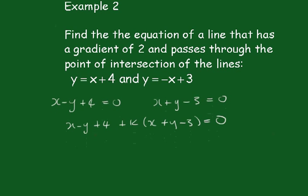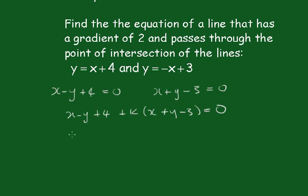Then x - y + 4 plus k into (x + y - 3) = 0. We need to rearrange this in the gradient form of the line. So this becomes x - y + 4 + kx + ky - 3k = 0.